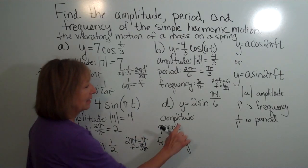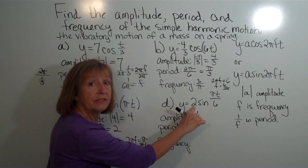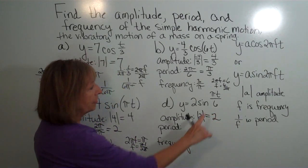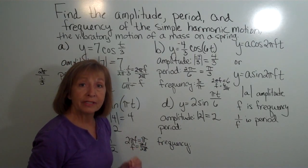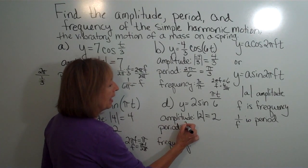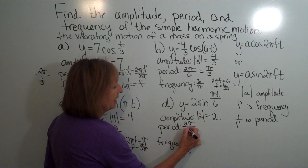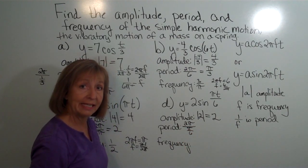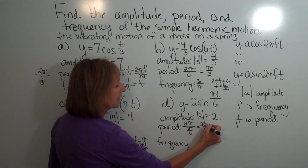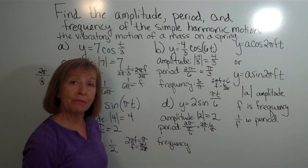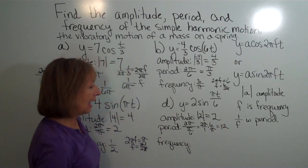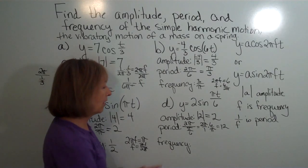For the last example, the amplitude is the absolute value of 2, which is 2. Think of pi t over 6 as pi over 6 times t — the coefficient times the variable. The period is 2 pi divided by pi over 6, which equals 2 pi over 1 times 6 over pi. The common factors of pi cancel, leaving 2 times 6, which is 12. The frequency is the reciprocal of 12, or one-twelfth.